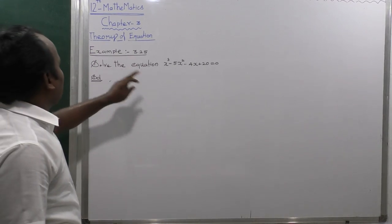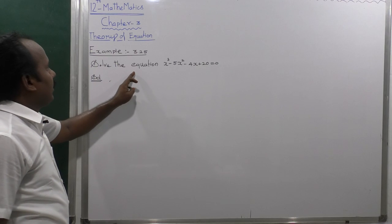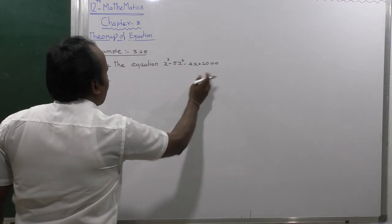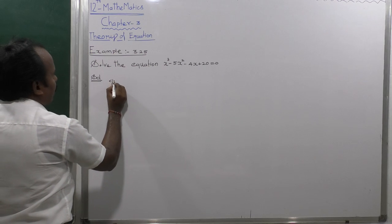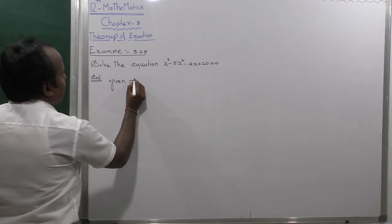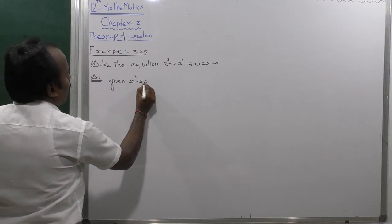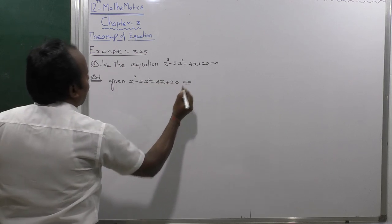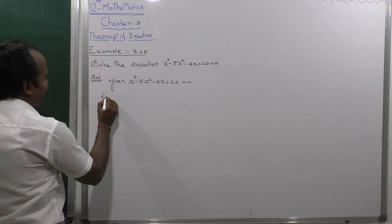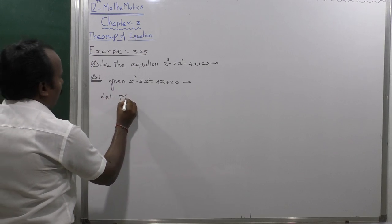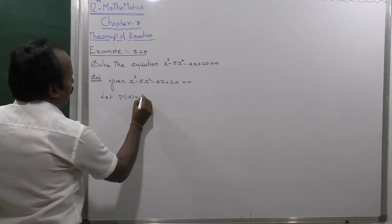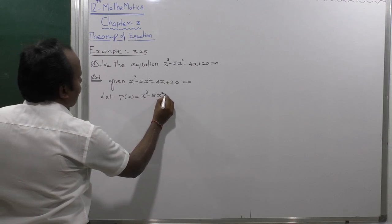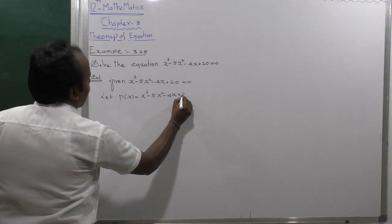Example 3.25: Solve the equation x cubed minus 5x squared minus 4x plus 20 equals 0. Let us take P of x equal to x cubed minus 5x squared minus 4x plus 20.